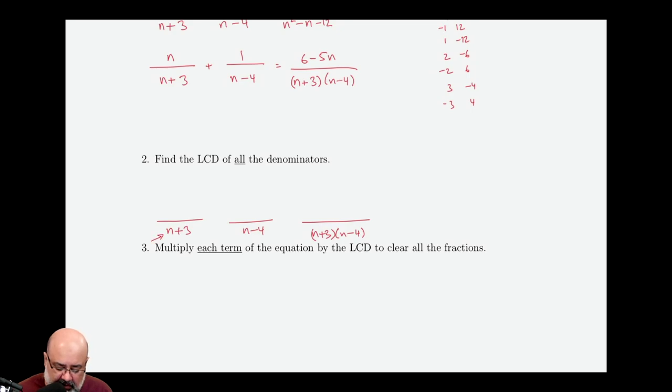Now what cancels in n plus 3, n plus 3? So I put that in the numerator of all these fractions. Now we ask the next fraction, what cancels in n minus 4? Well, n minus 4.